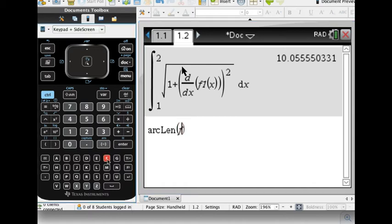So I'm going to put in f1 of x. Comma, x, comma, 1, comma, 2. And there we get it. So we can do it a couple different ways.